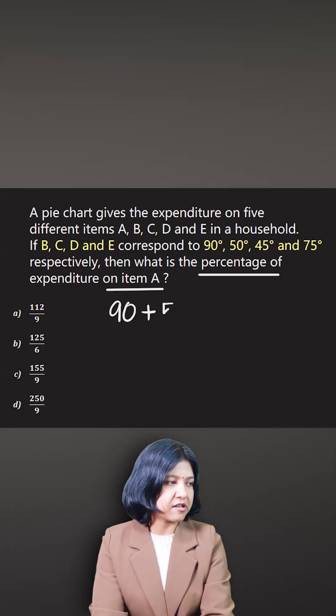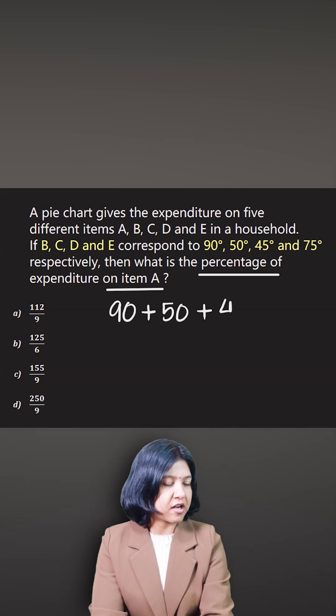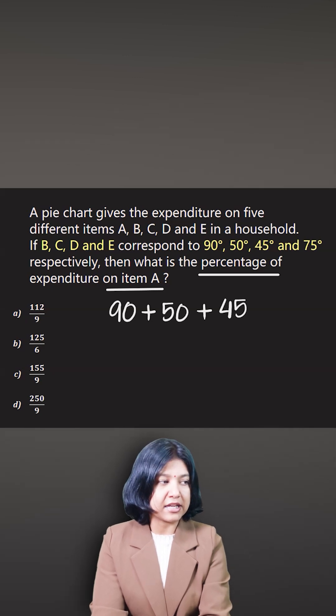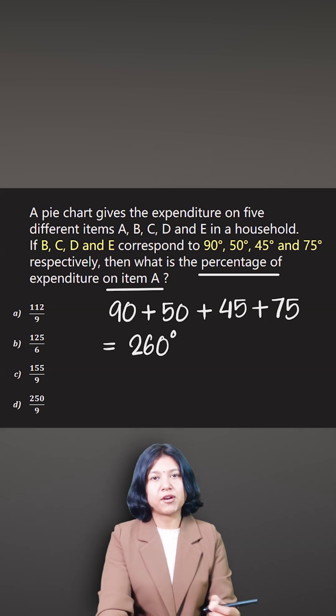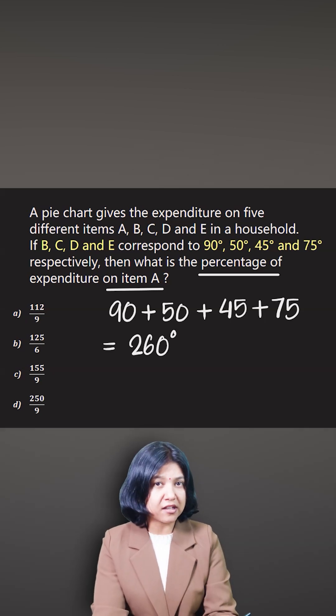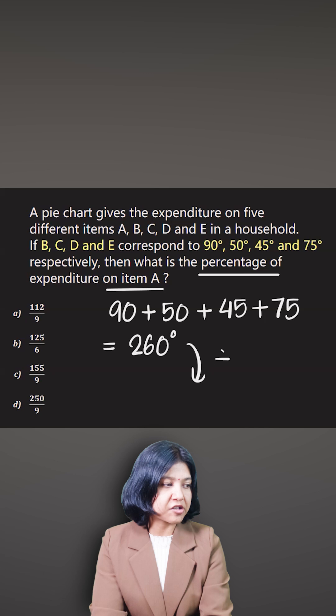90 plus 50 is 140, plus another 40 will be 180, plus 80—so we get 260 degrees. The sum of angles here is 260, which means the remaining angle has to be—you always subtract from 360—so the remaining angle is 100 degrees.